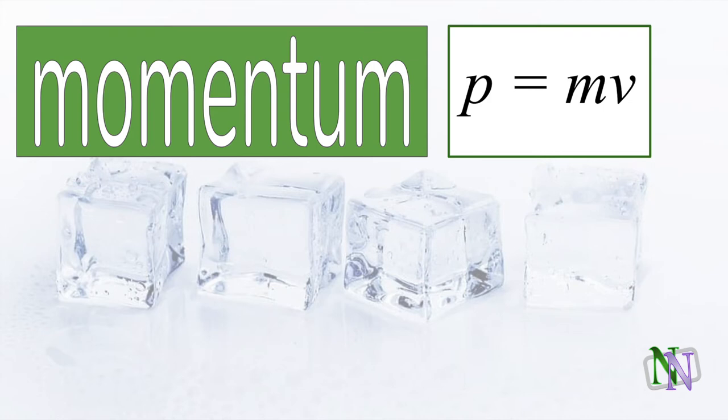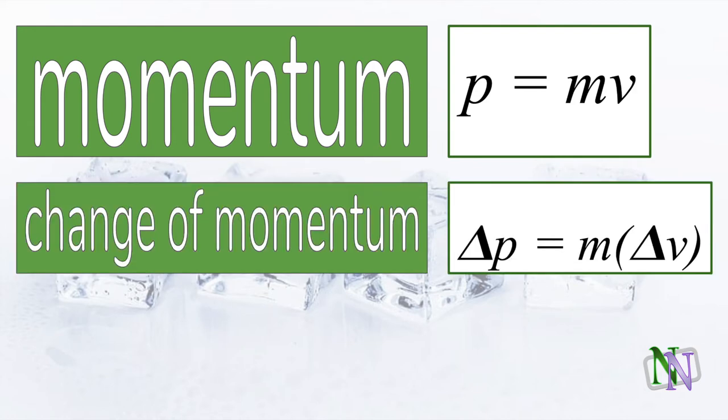Here again is the definition of momentum, which is also its formula. In IB physics we are only concerned with a situation where the velocity changes, so this is the formula for a change in momentum in which the velocity changes. The change in momentum is the constant mass times the change in velocity.